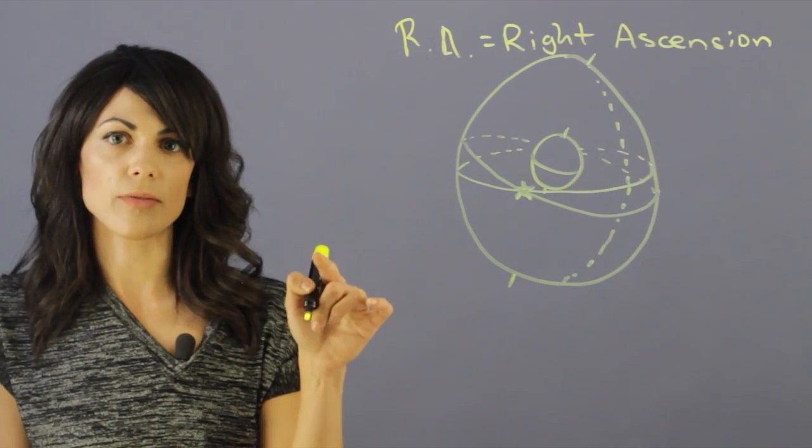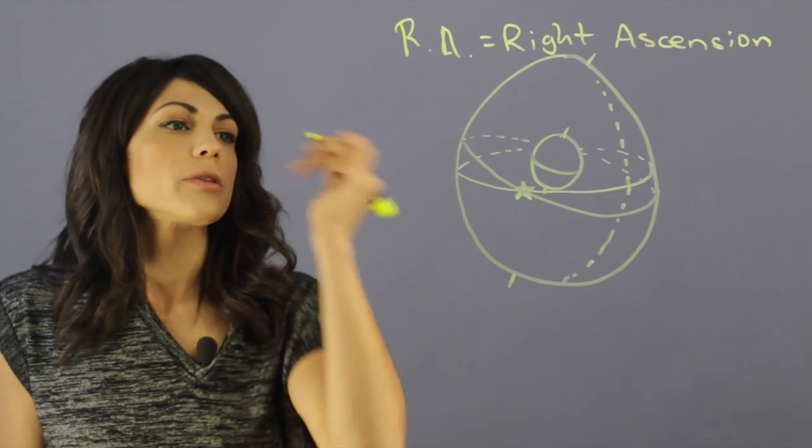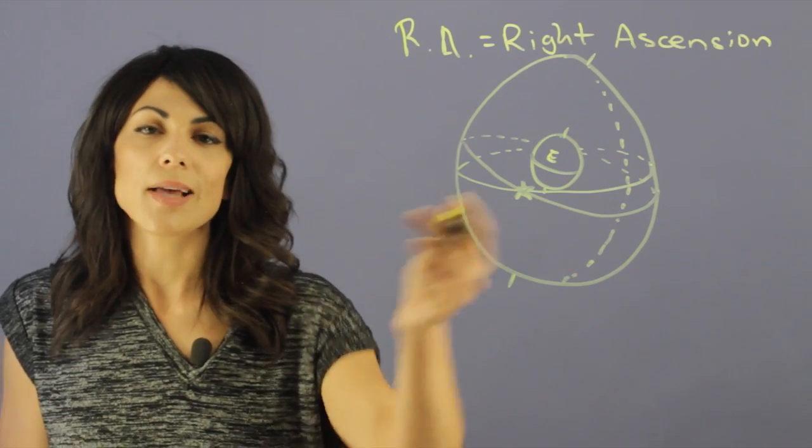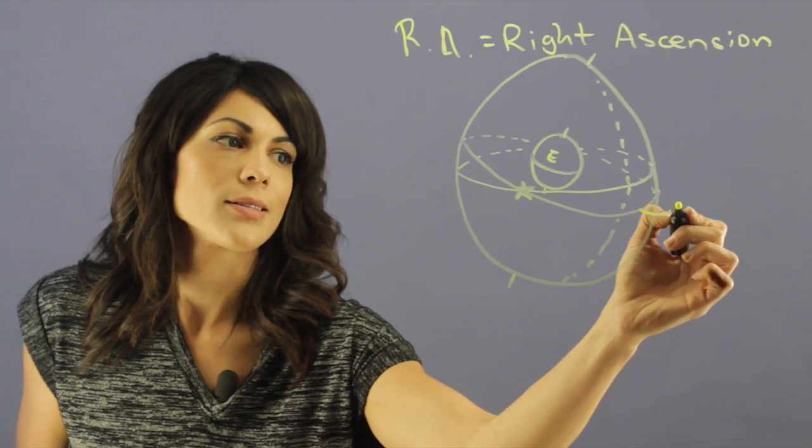And I'm going to talk very briefly about how we map the sky and the celestial coordinates. So if we have here, we have Earth and this is our equator. If we map this out into a larger volume, we will call this line the celestial equator.